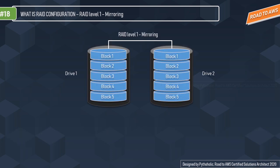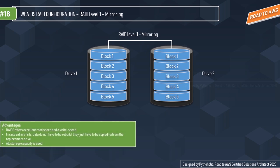RAID 1 is mirroring. Data is stored twice by writing to both the data drive and the mirror drive. If a drive fails, the controller uses either drive for data recovery and continuous operation. As you can see, block 1 is stored in both drive 1 and drive 2, and the same goes for all other blocks — creating a mirror effect so all blocks are available in both drives.